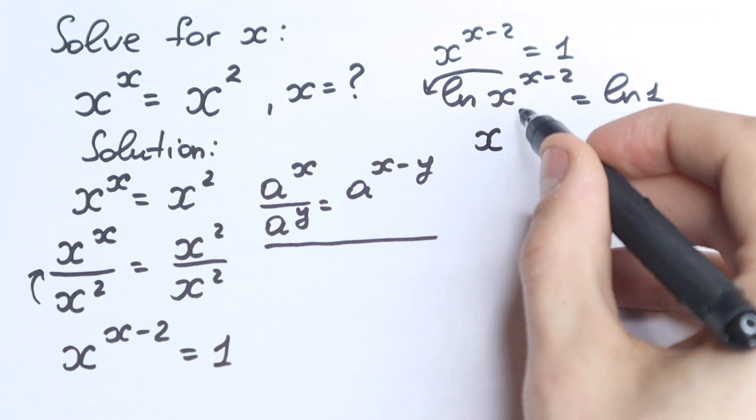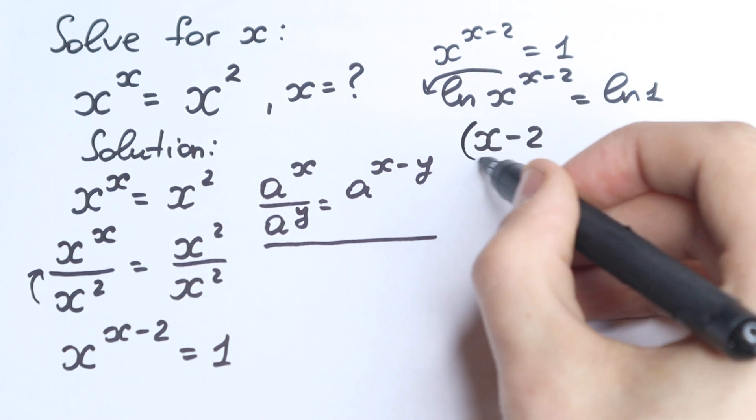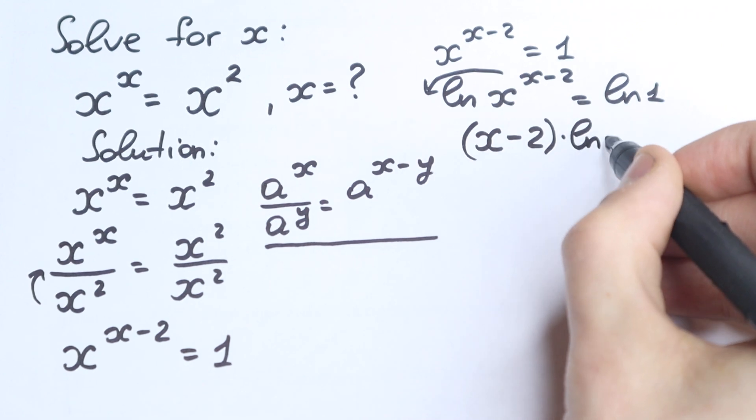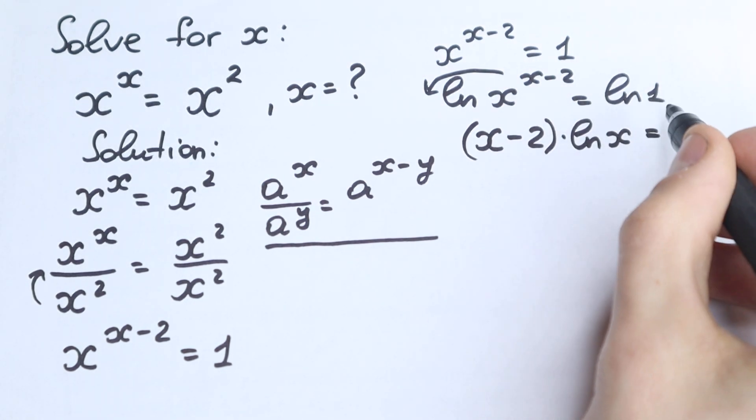This x minus 2 goes back right here, so we have x to the power x minus 2, sorry, x minus 2 times natural log x equal to natural log 1 equal to 0.